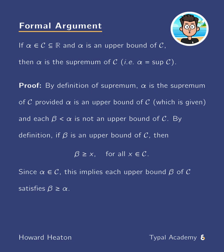And then what we do is we rewrite this statement in a way that matches our original definition above. Here we can say, equivalently, if beta is less than alpha, then beta is not an upper bound of C.